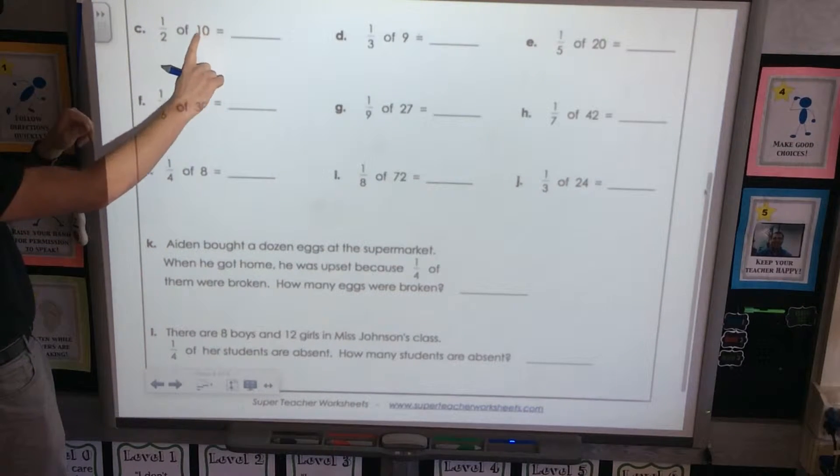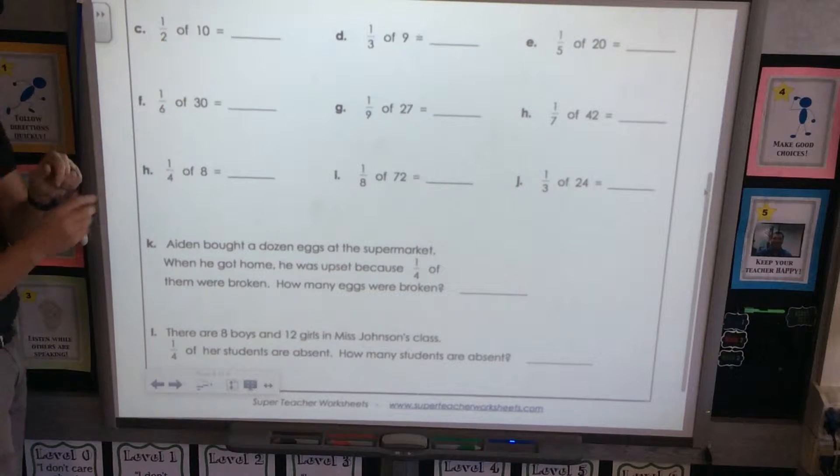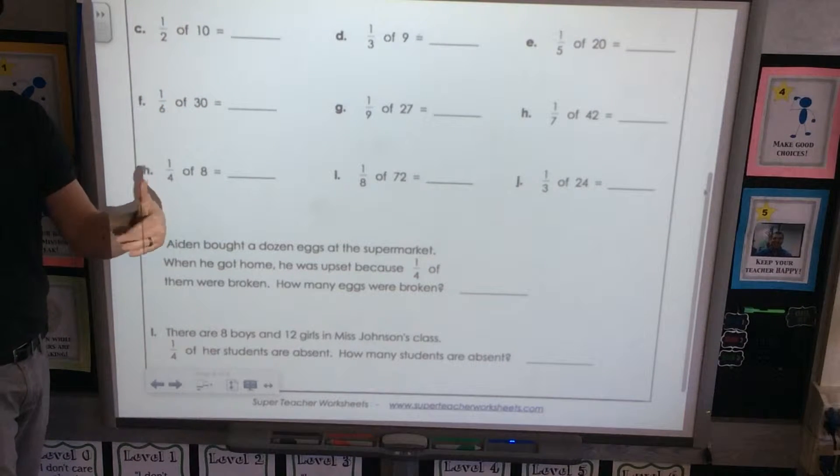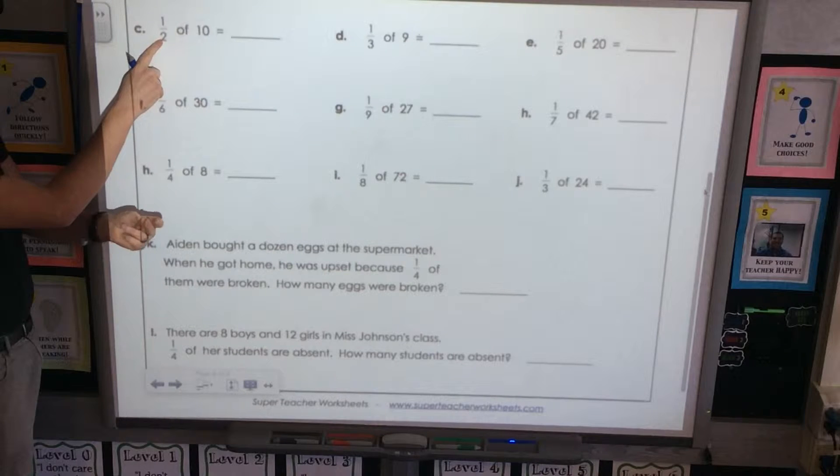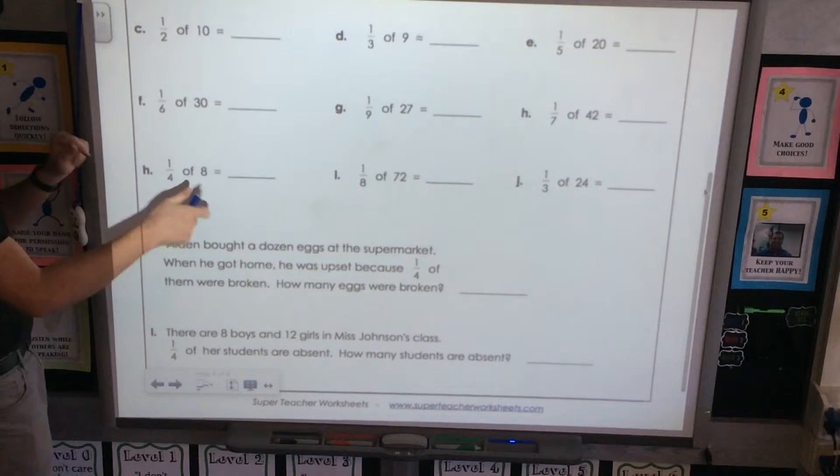We're going to go ahead and take our total and divide it up into how many equal groups in the whole? How many? Two. Two. So let's go ahead and do that.